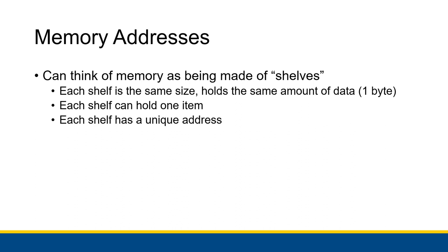Each shelf is the same size and holds the same amount of data, which is typically one byte. One byte is eight bits — eight binary digits together — and can represent numbers from zero to 255. We actually use bytes to store all kinds of information. Each shelf holds one byte and can only hold one byte — you can't stack two bytes on there. If you tried to do that, you would end up clearing out the byte that was already there and replacing it with the new one.